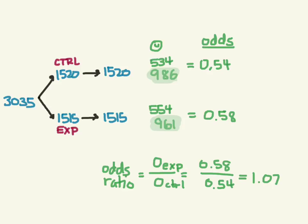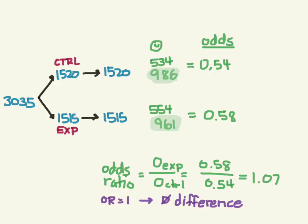An odds ratio of 1 means there's no difference between the two groups. An odds ratio greater than 1 means the experimental group is more likely to experience the benefit. An odds ratio less than 1 means they're less likely. Some papers report an adjusted odds ratio, which uses statistical methods to control for confounding factors — like if there were more smokers in one group. Don't worry about that for now.